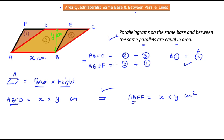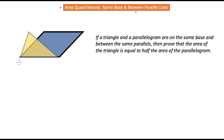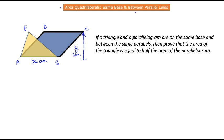Now let's compare the area of a triangle with the area of a parallelogram when they are between the same parallel lines. We have parallelogram ABCD and triangle ABE on the same base. Let the base equal x centimeters. The height, which is the perpendicular distance between the two parallel lines, is y centimeters — and this is also the height of the triangle.